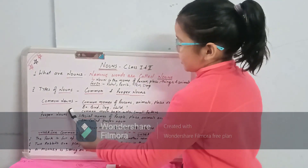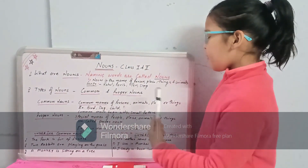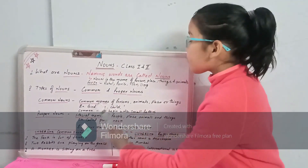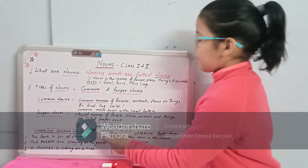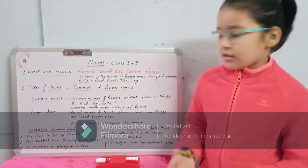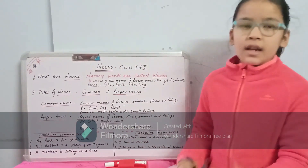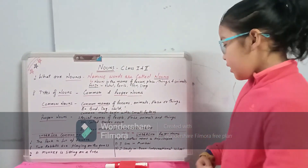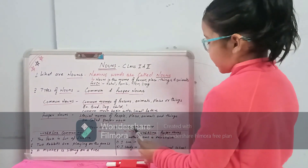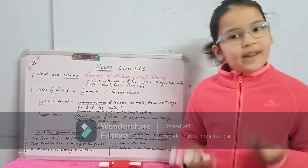Now let us do proper nouns. Special names of people, places, animals, and things are called proper nouns. For example, your name — it could be Rohan, Ritu, or anything. A pet name could be Kitty, Brownie, or Smiley. It could also be any place name — where you visit or where you live.